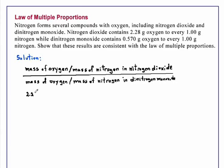So this gives us 2.28 to 1 as the ratio in the first compound, and that is divided by 0.570 to 1 in the second compound.